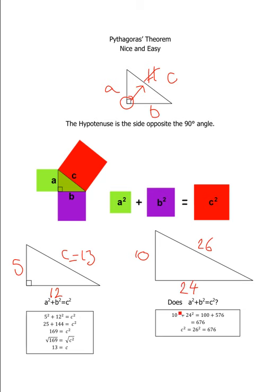10 squared plus 24 squared is equal to 100 plus 576. 100 plus 576 is 676. C in this case is 26. C squared is equal to 26 squared. 26 squared is also equal to 676. Because these numbers are equal, we know that 26 squared is equal to 10 squared plus 24 squared. Therefore, we can label this triangle as a right-angled triangle.